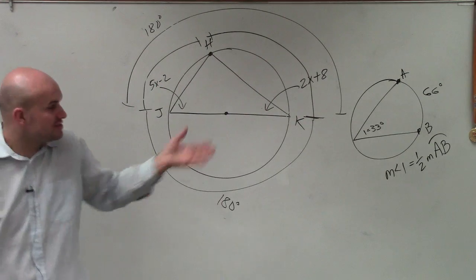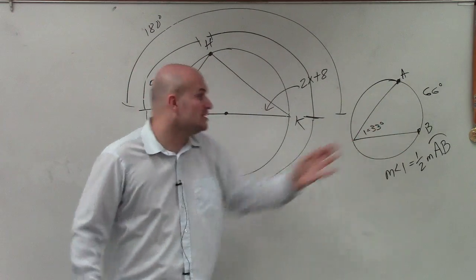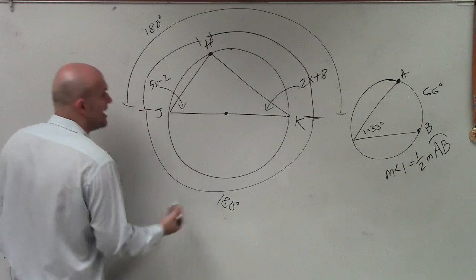But remember, the arc's inscribed angle is 1 half of that. So these two add up to 1 half of 180, which is 90.